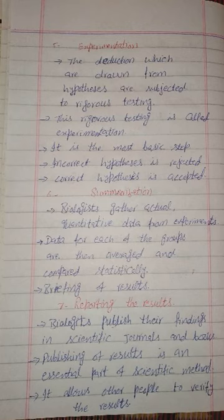In summary: the deductions drawn from a hypothesis are subjected to rigorous testing — this is called experimentation, and it is the most basic step. An incorrect hypothesis is rejected; a correct one is accepted. Biologists gather actual quantitative data from experiments; data for each group are averaged and compared statistically. The next step is reporting results — biologists publish their findings in scientific journals and books. Publishing results is an essential part of the scientific method, as it allows other people to verify the results.